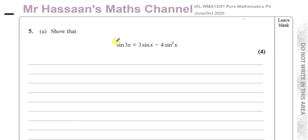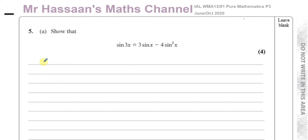So we've got to take sine of 3x and show that it becomes this. You could, if you wanted to, also do it the other way around, but I think it's easier to start with sine 3x here.